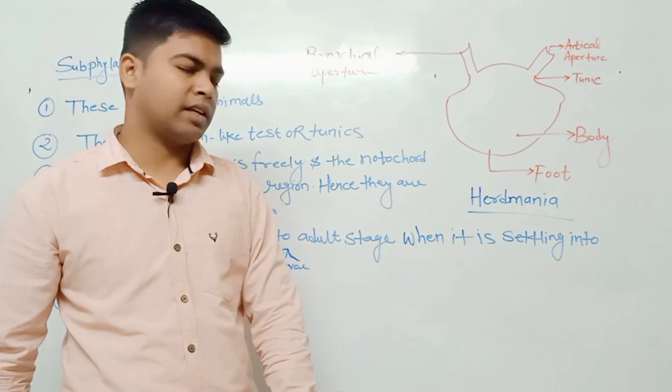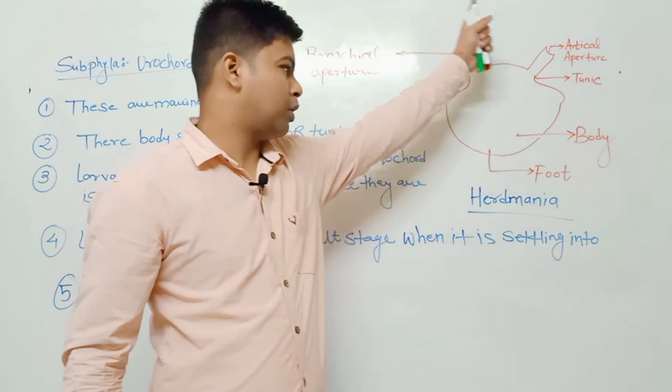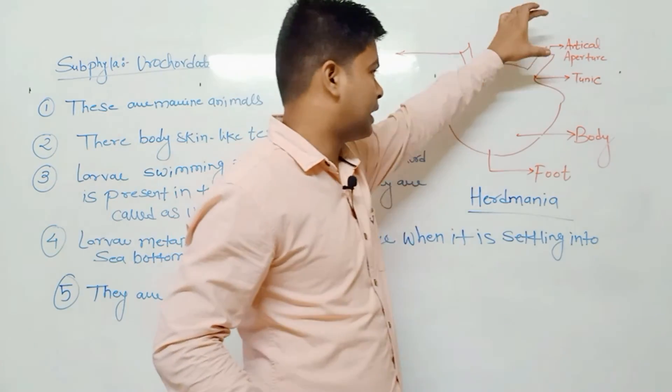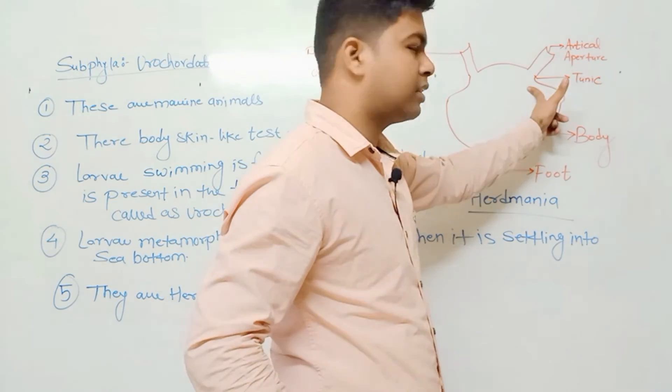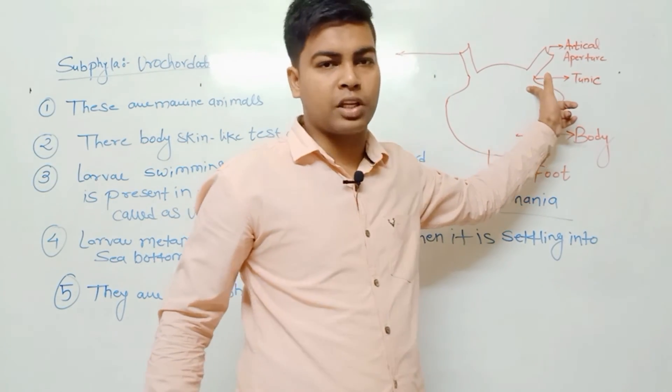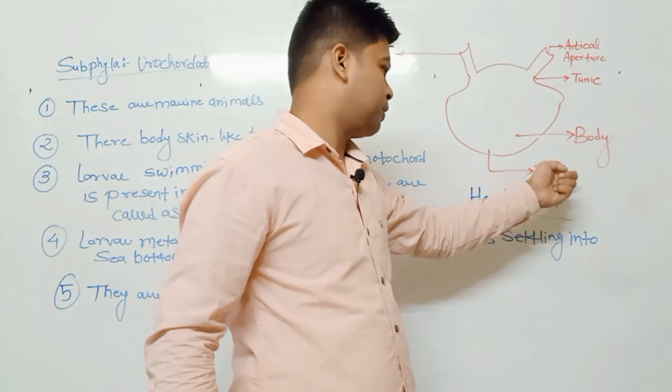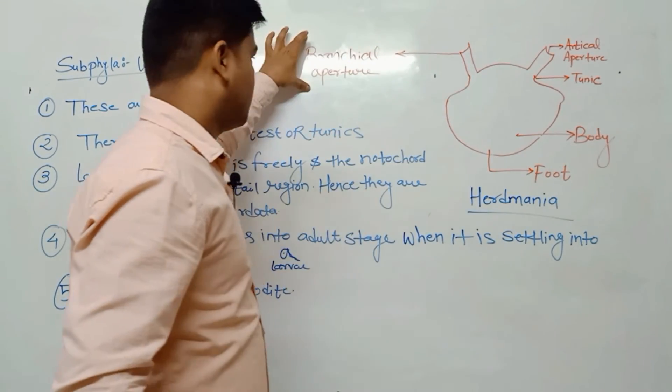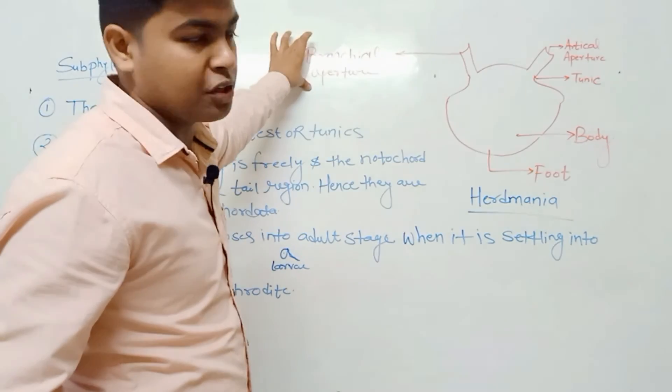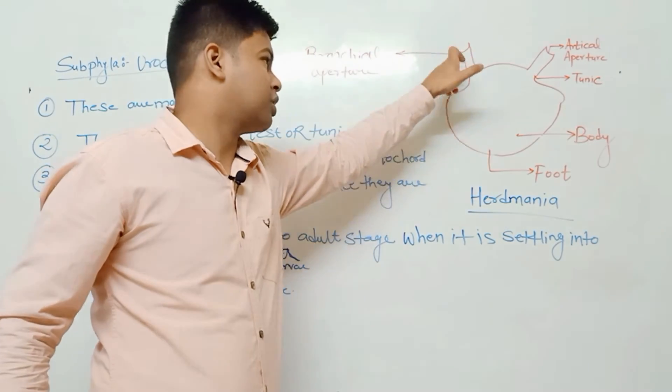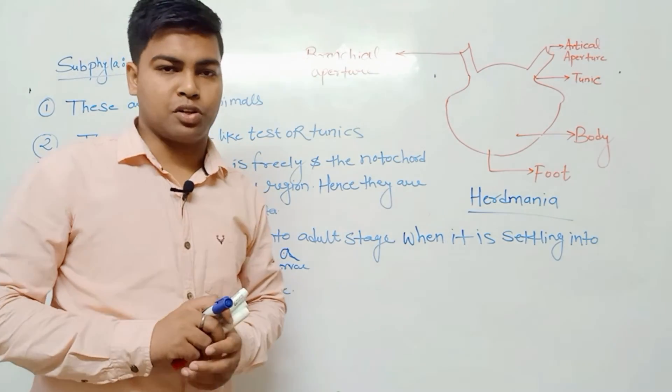Example is Herdmania. This is the example of Herdmania. It shows archeal aperture and tunix. We have seen that the body skin is the tunix - body, foot, and this is the branchial aperture. This structure is called the branchial aperture.